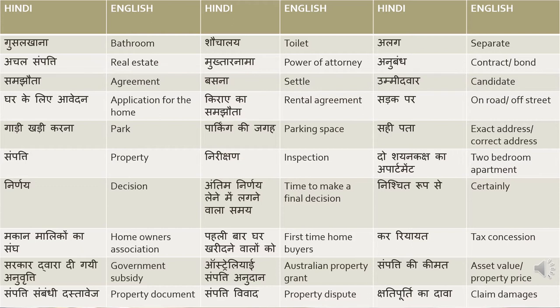Parking ki jage means parking space. Sahipata means exact address or correct address. Sometimes the agent will ask 'can you tell me the exact address of the property you saw?' — kya aap mujhe woh sahih pata bata sakte hai jaha pe aapne sampatti dekhi. Sampatti means property. Nirikshan means inspection. Do shayankaksh ka apartment means two-bedroom apartment. Two bedroom can also be said as is, but translate it as do shayankaksh.